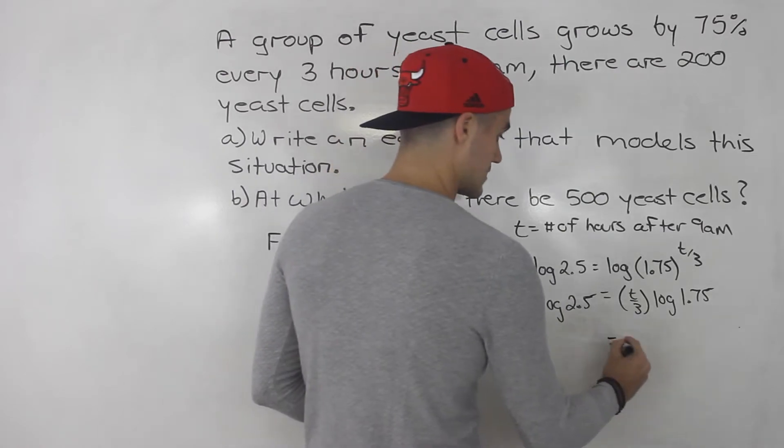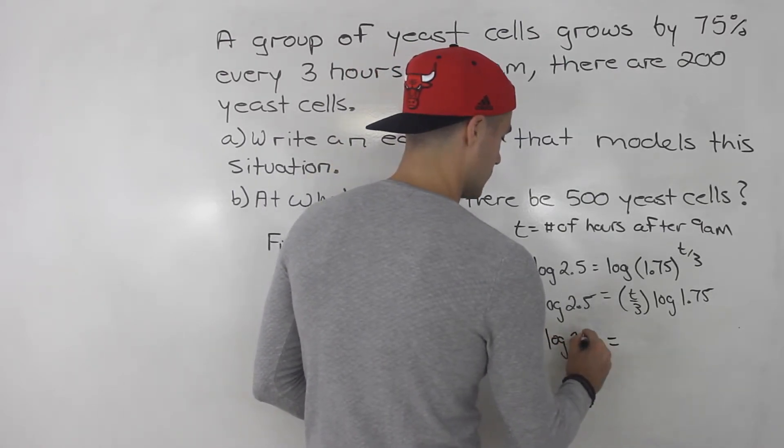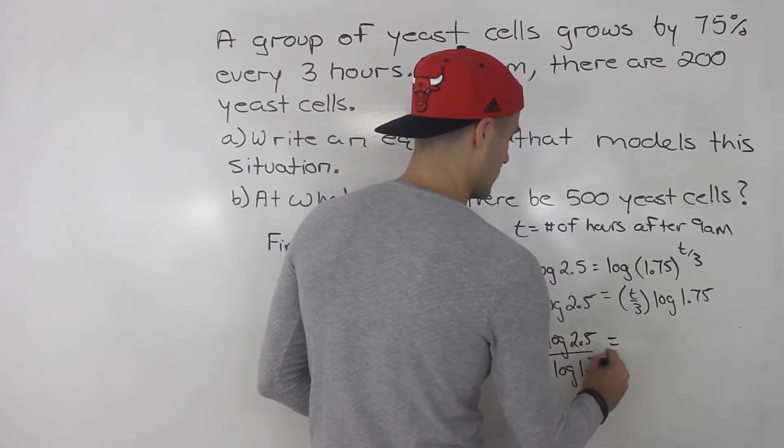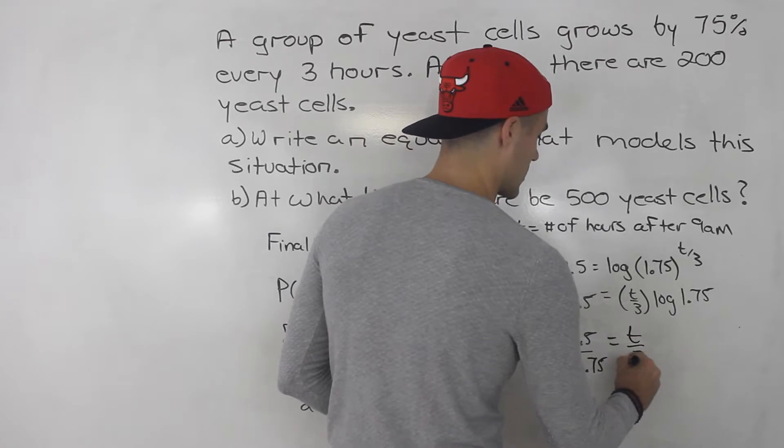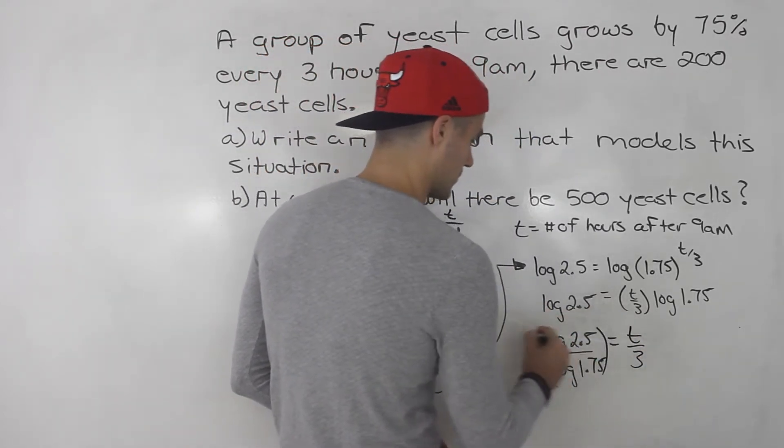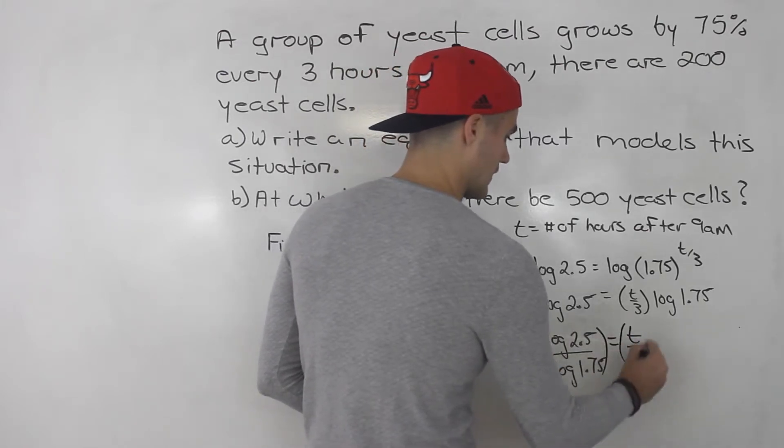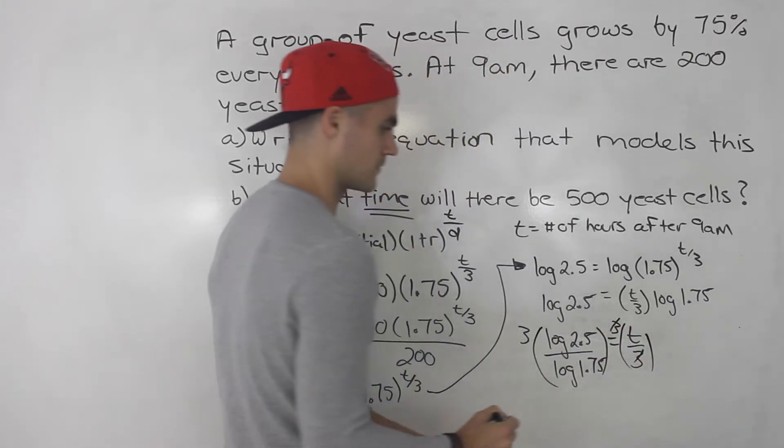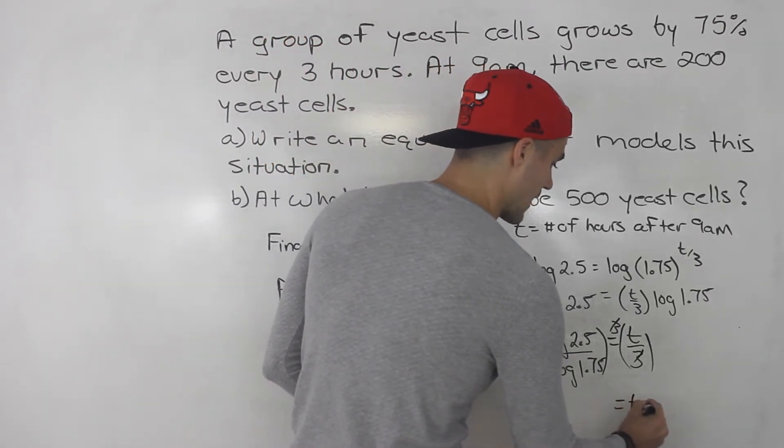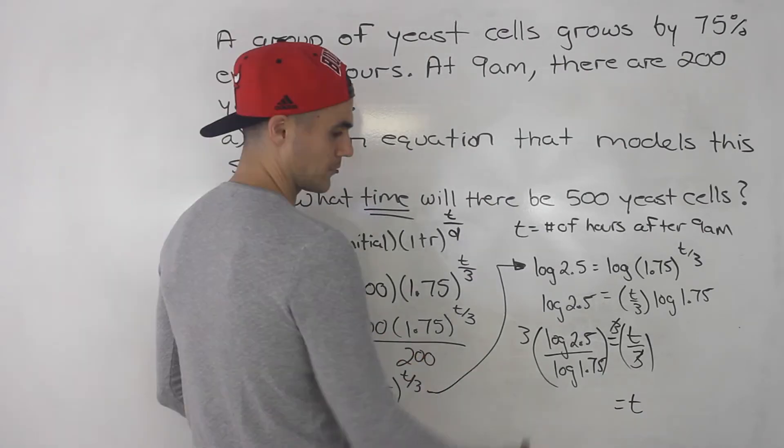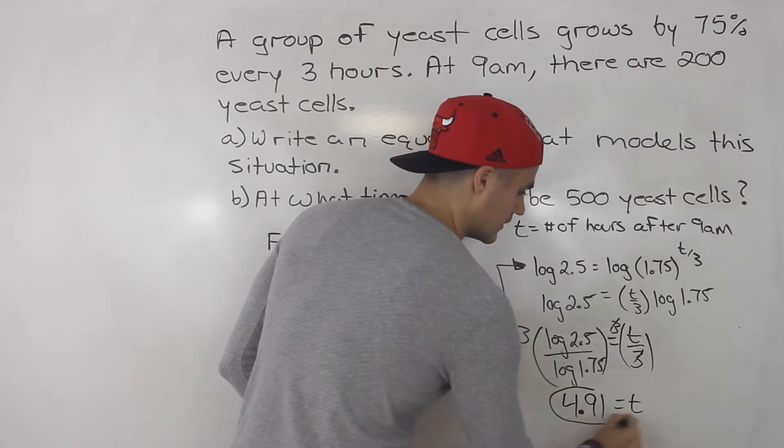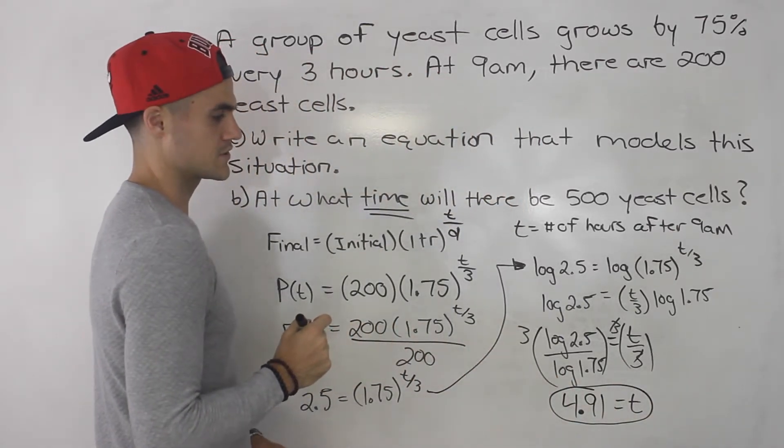We're now just trying to isolate for t. So we'll have log 2.5 over log 1.75, and this equals t over 3. To get rid of this 3, we multiply both sides by 3. Those 3's cancel out. So basically all of this, if you plug it into your calculator, gives you the value of t. When you do that you get 4.91 hours.